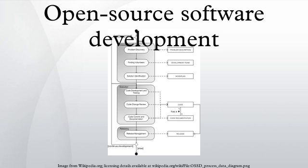Many open source projects are now using distributed revision control systems, which scale better than centralized repositories such as SVN and CVS. Popular examples are Git, used by the Linux kernel, and Mercurial, used by the Python programming language.